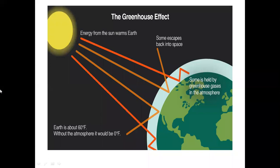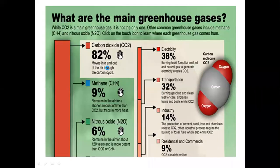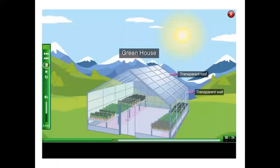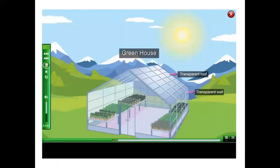Now the greenhouse effect can be compared to a greenhouse — like the ones you see in a nursery. There are greenhouses built in very cold countries where sun's heat is allowed to get in, but it is not allowed to get out. The transparent roof and transparent walls allow sunlight to enter, but it is not allowed to get out, and this warms up and increases the temperature inside the greenhouse.